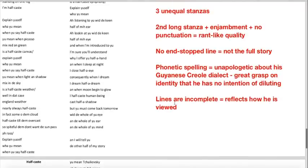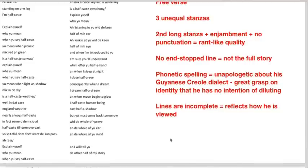The lines are incomplete as well. And I think that reflects how he is viewed. He feels like those that would refer to him as half-caste would view him as half a person. And I think the lines reflect that.